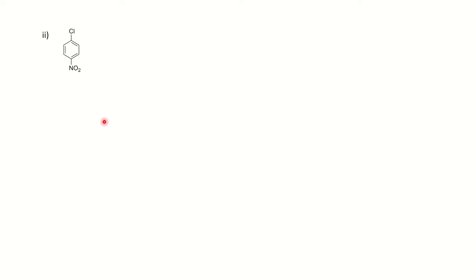For next, you have parachloronitrobenzene. Here total four protons are there in the aromatic ring. So we will see how many signals we can expect, how many different types of protons are there. So if you know about two terms called chemical equivalence and magnetic equivalence, if your concept is clear, you can solve this problem. If you have no idea about it, I have already prepared a video on that. I will share the link in the description box.